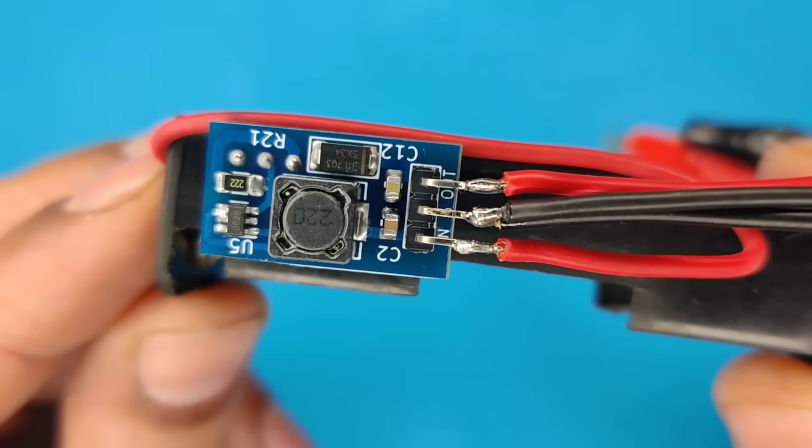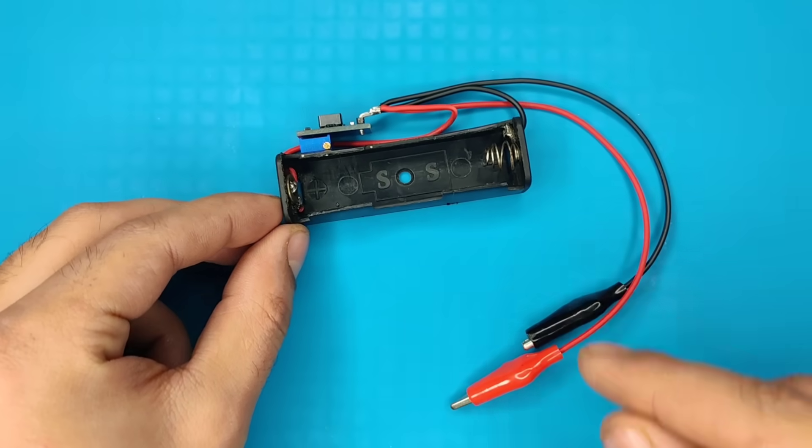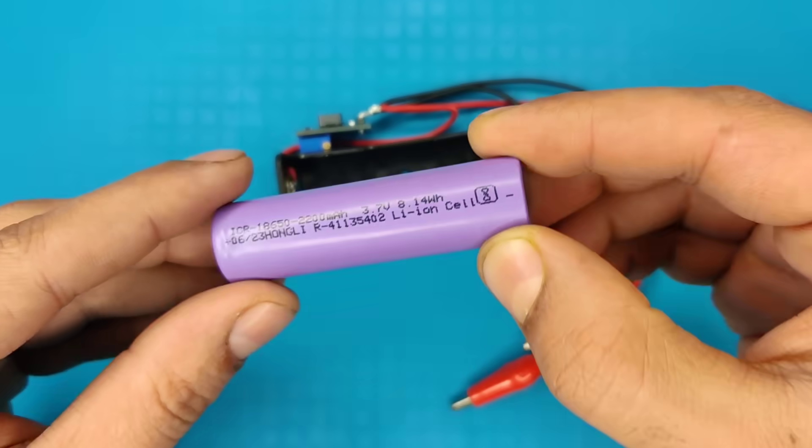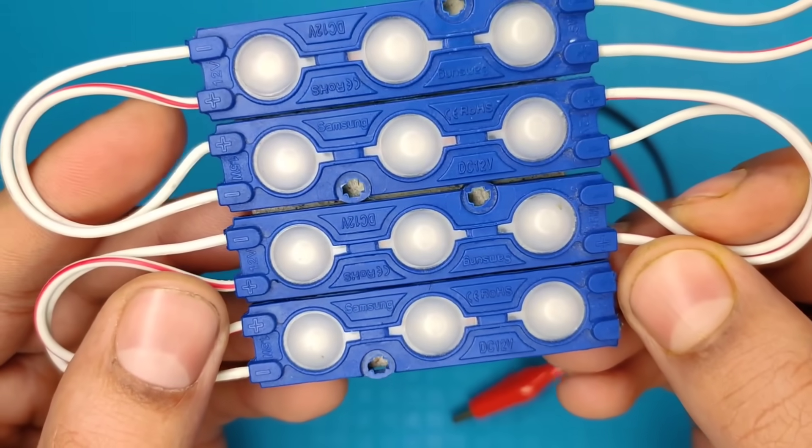Now back to the testing, our circuit is totally ready for testing. Use a 3.7 volt 18650 lithium battery and insert into the battery holder.